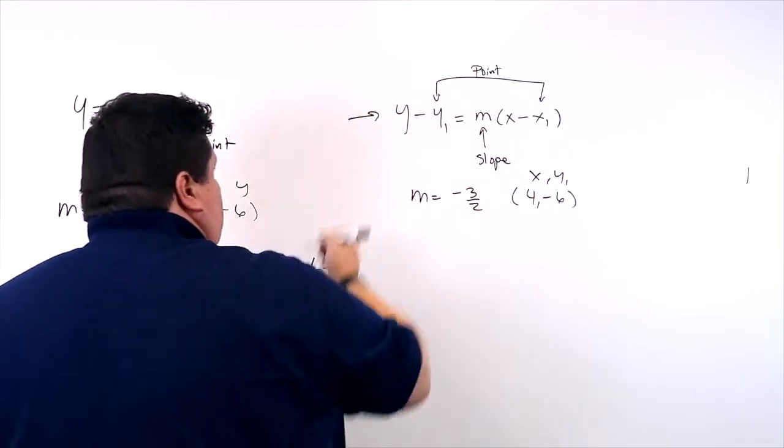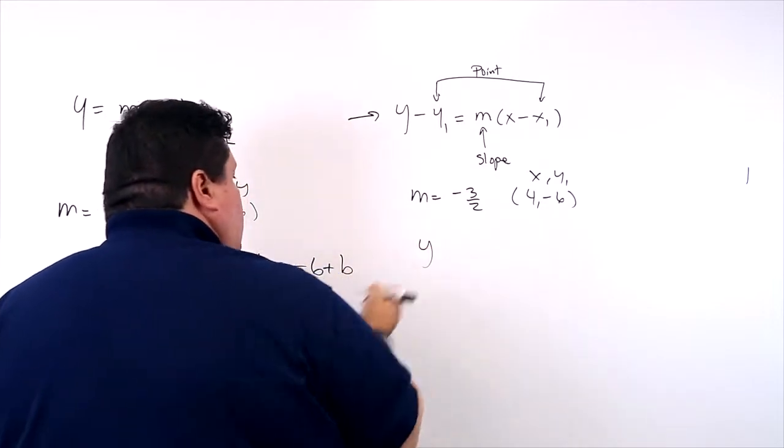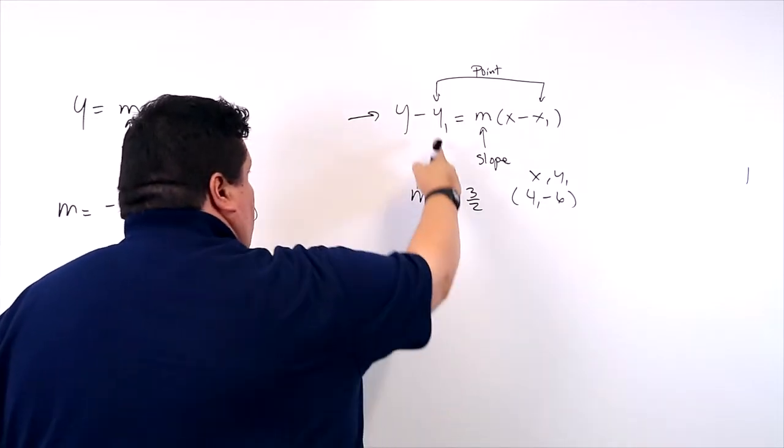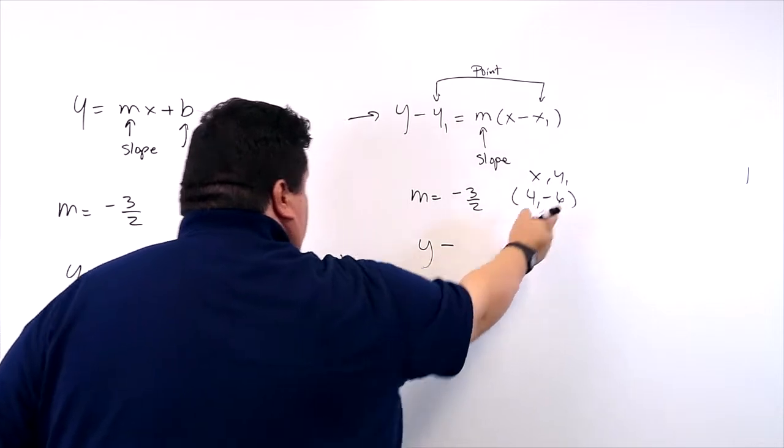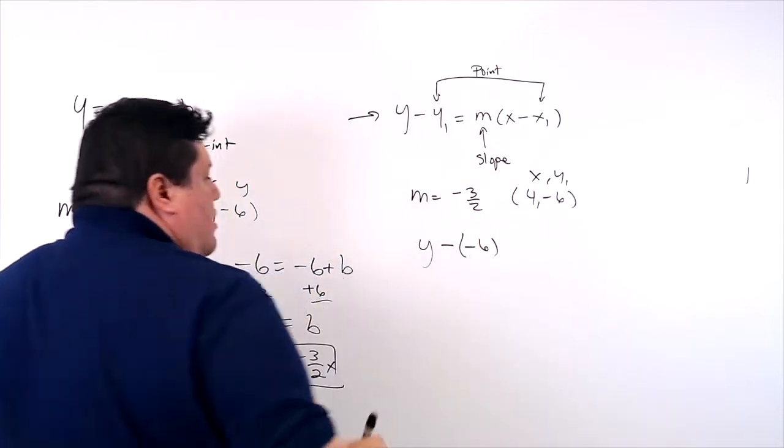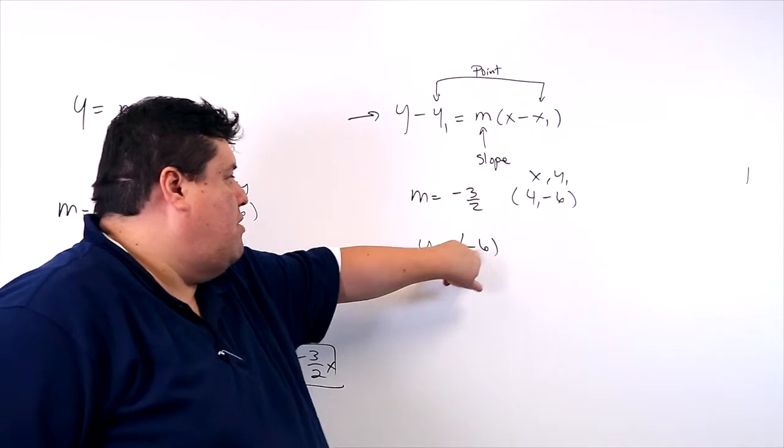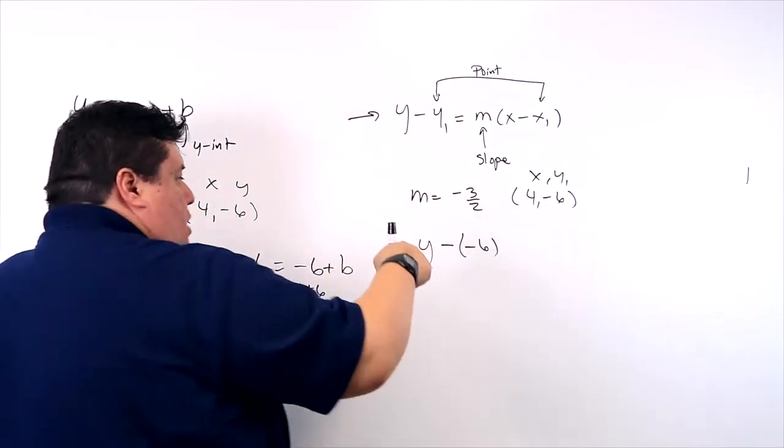All right, so let's plug it in. y is just y. Take away y1. y1 is what? Negative 6. So I'm going to put parentheses on there. So put parentheses. Parentheses means what? Multiply.